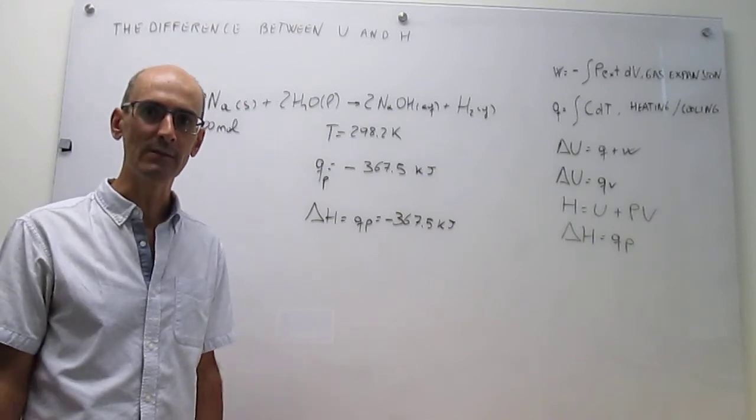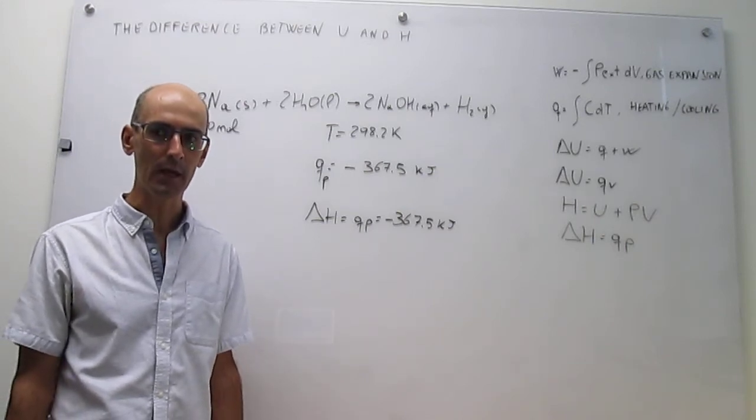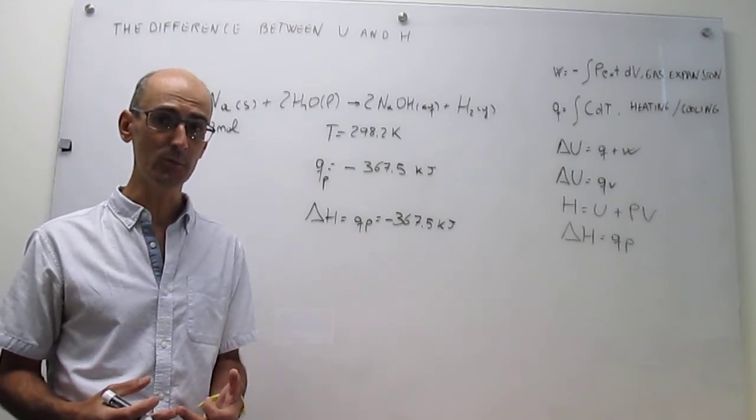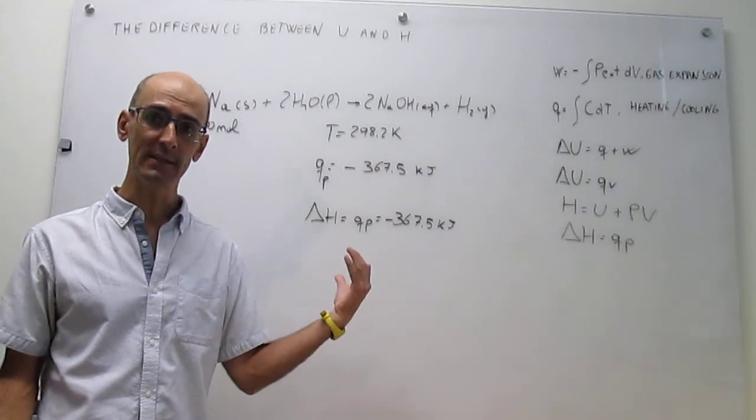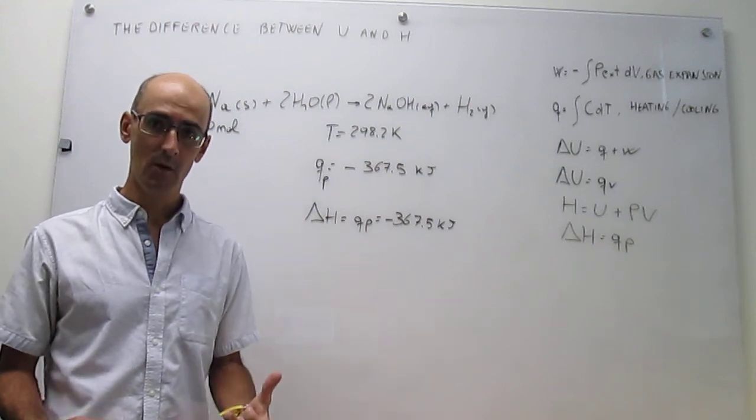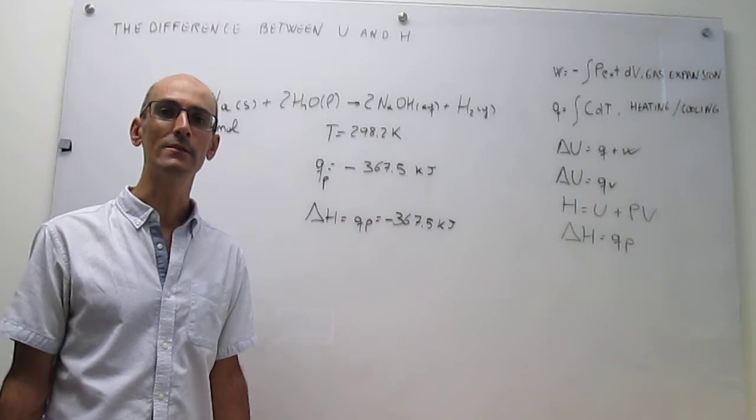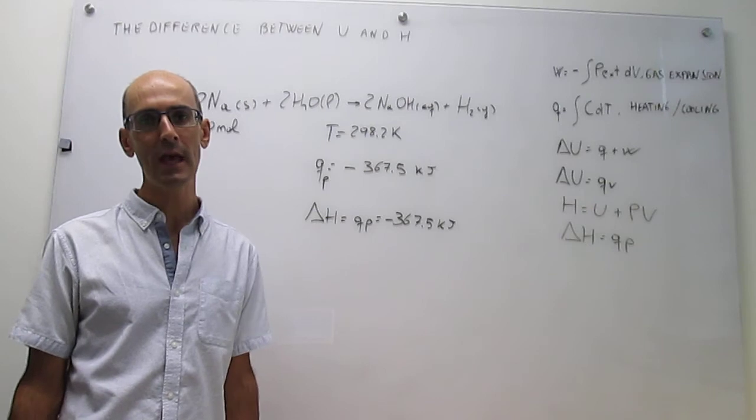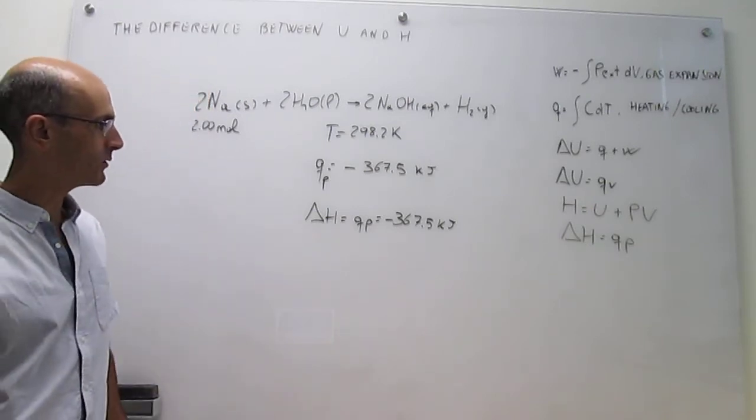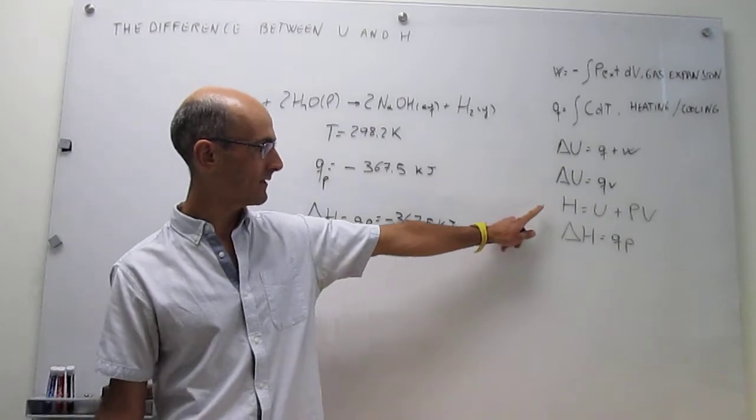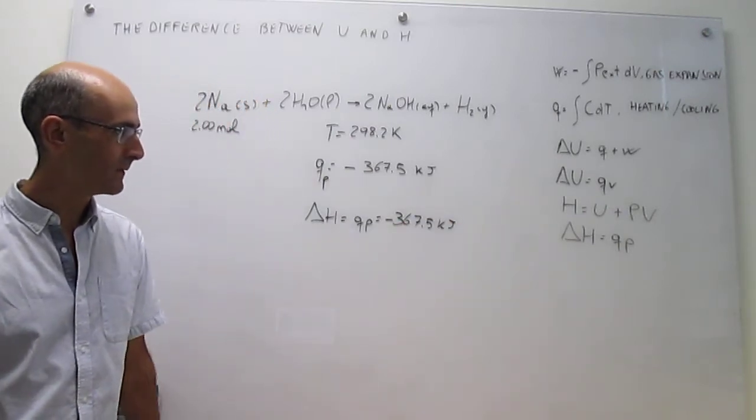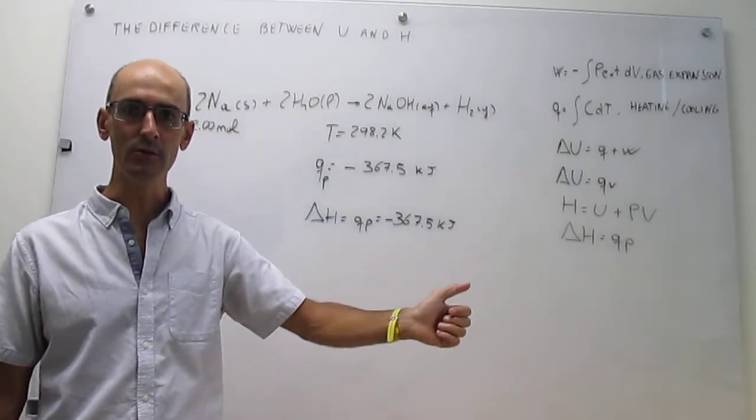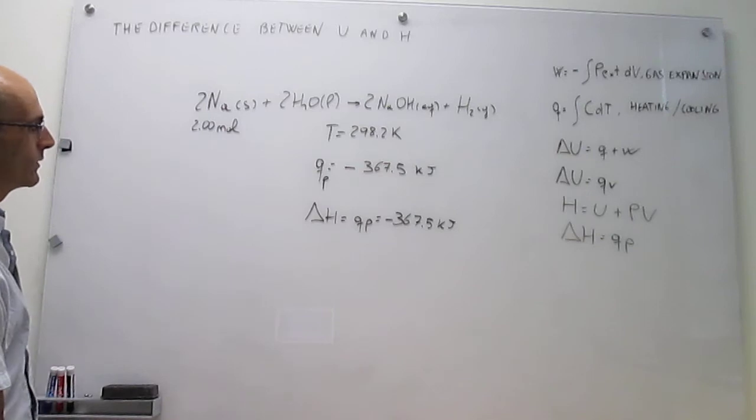From here, we are going to try to calculate the change in internal energy from delta H. And then a comparison to this delta H value will be illuminating in trying to see what the similarities and differences are between enthalpy and internal energy. We are going to take the definition of enthalpy because if we take changes, we can calculate delta U from delta H.